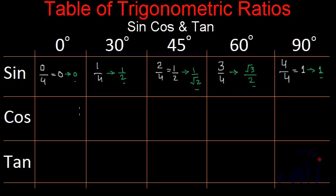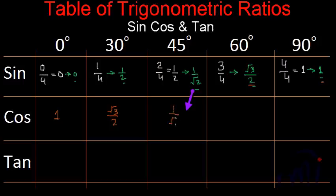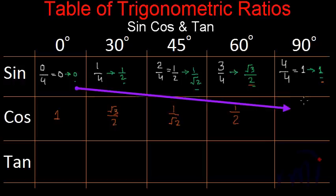And how to find the values of cos? You just write down all these values in reverse order. That means cos 0 will be equal to sine 90 which is 1. Cos 30 will be root 3 by 2. Cos 45 will be 1 by root 2. Cos 60 will be 1 by 2. And cos 90 will be 0.